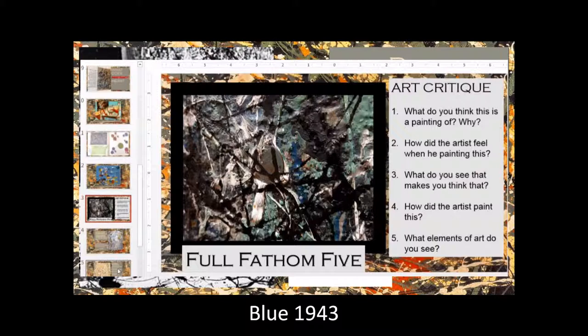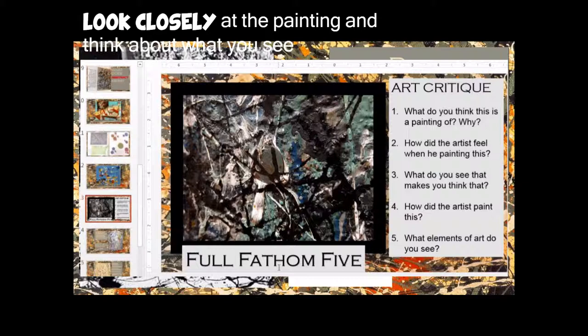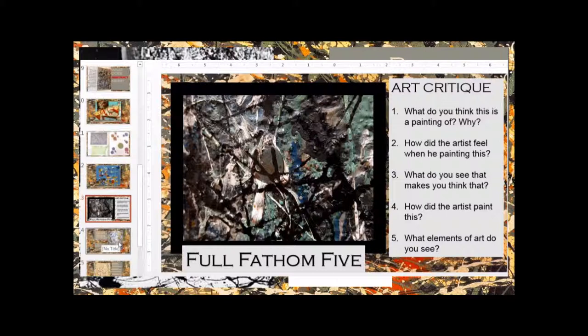Here's another one of his paintings called Blue, painted in 1943. And another painting, a very close up of a painting called Full Fathom Five. What do you think this is a painting of? How do you think that he felt when he was painting this? What do you see that makes you think that? How did the artist paint this? And what elements of art do you see in this painting?